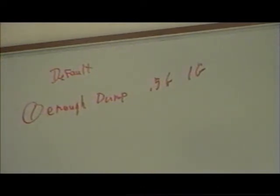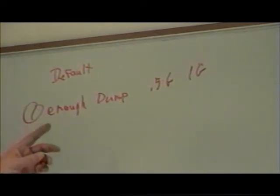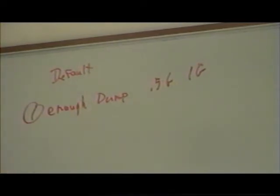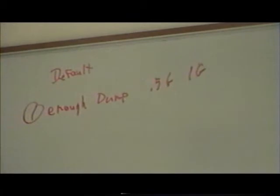For example, if I have a 16-CPU system, how much would be good? That would probably be half a gig — that's a starting point. It depends upon how much they're going to dump, but that was the general rule for a dump.